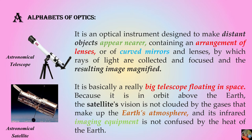By definition, an astronomical telescope is an instrument designed to make distant objects appear nearer, containing an arrangement of lenses and curved mirrors that focus to form an image. An astronomical satellite is a bigger type of telescope — also called a telescope floating in space — which floats in vacuum or space where it can collect information about gases and Earth's atmosphere, transferring images to stations on Earth.